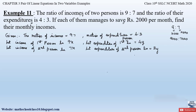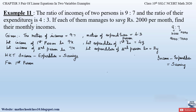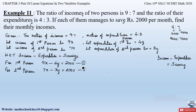We know that income minus expenditure equals saving. Using this relationship we form two equations. For the first person: 9x minus 4y equals 2000 — let this be equation 1. For the second person: 7x minus 3y equals 2000 — let this be equation 2. So we have formed a linear pair of equations.